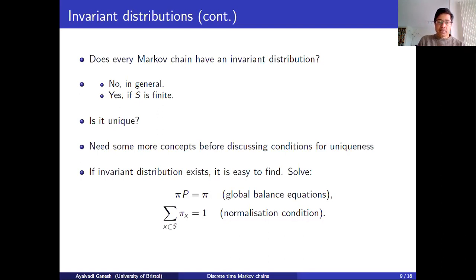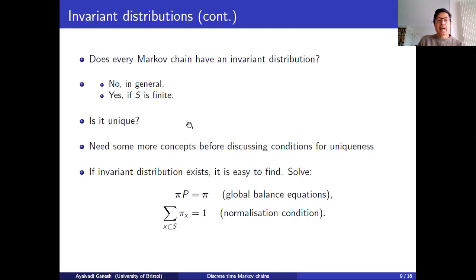The next natural question is: is there always such an invariant distribution? We saw that for finite state chains, there is. We didn't prove, but stated that in general this is not true. We also postponed the discussion of uniqueness. So in this lecture, we are going to introduce some more concepts which we need in order to talk about uniqueness.